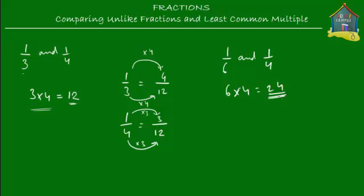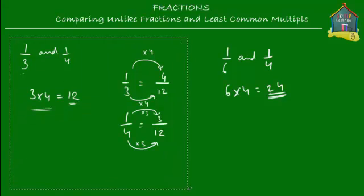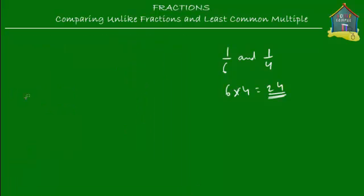According to this method, you would multiply 6 and 4 to get 24, and 24 is how many slices you would have to cut the lasagna into. Let's make one lasagna and cut it into 24 slices to see if this is the best method for representing one-sixth and one-fourth.